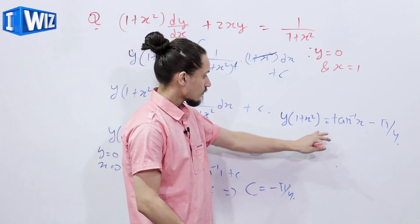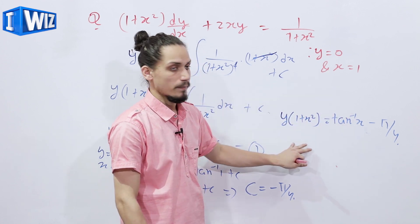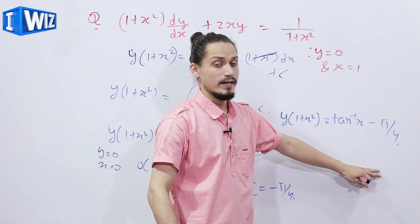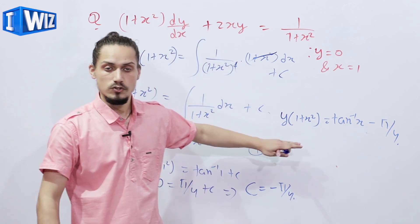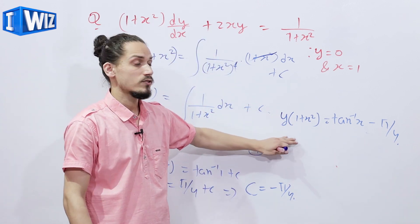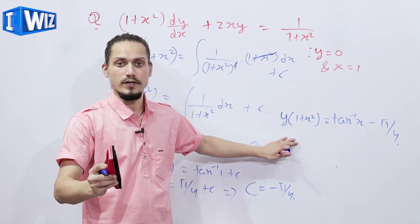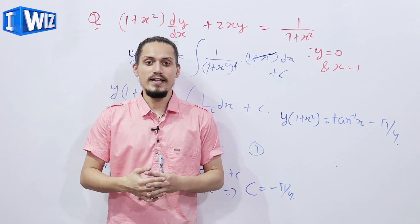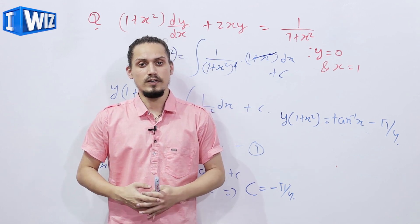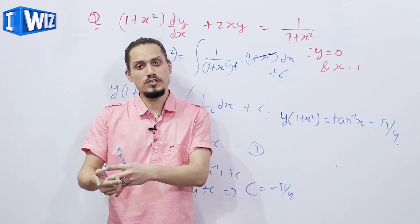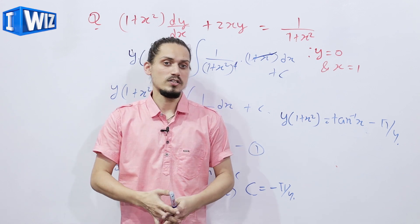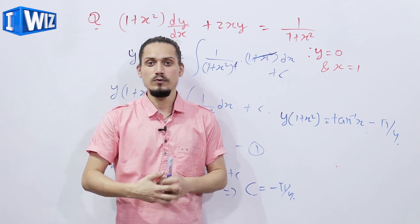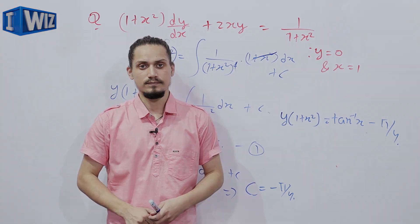Using c = -π/4 in the general solution, we get y·(1 + x²) = tan⁻¹(x) - π/4. This is the required particular solution. When we know the value of the constant of integration and use it in the general solution, the required solution becomes a particular solution. If you have any problems or doubts regarding the chapter of differential equations, leave a comment and we will get back to you. Until next time, keep practicing.